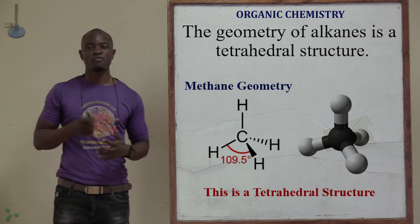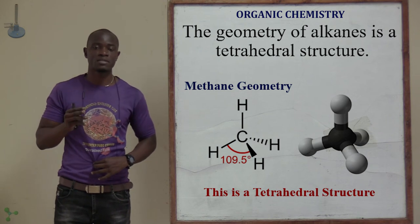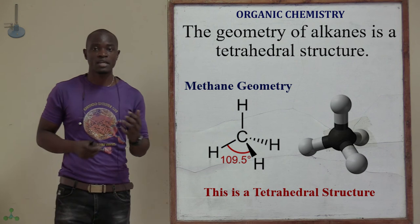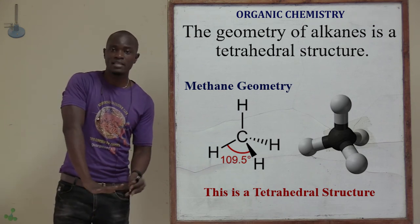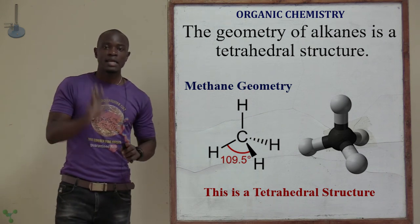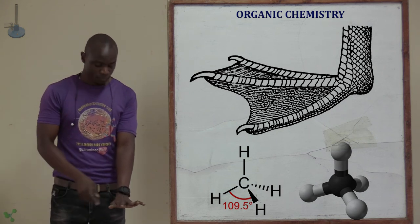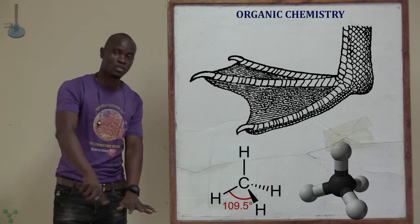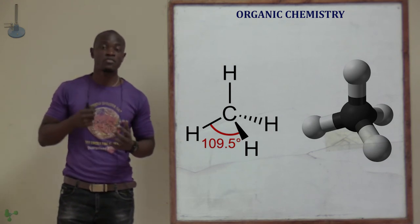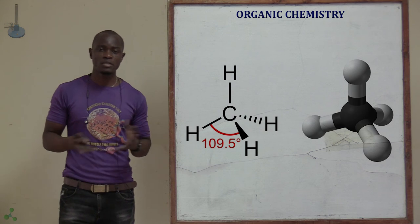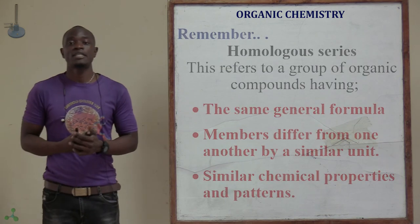In all alkanes, the distribution of bonds around each carbon atom is tetrahedral. The bonds found in alkanes have a tetrahedral structure. For example, methane looks like the foot of a duck — the bonds spread out from the center. This tetrahedral structure has at least 109.5 degrees between the hydrogen atoms, as you can see in the structure.